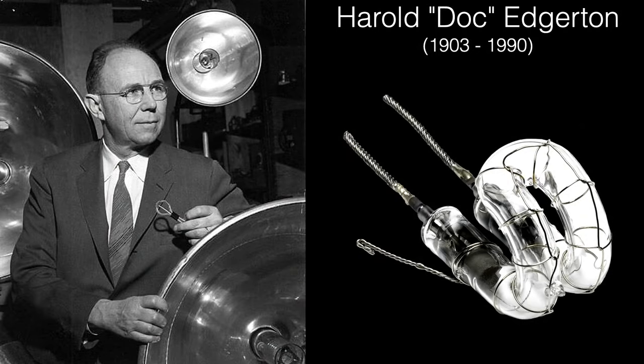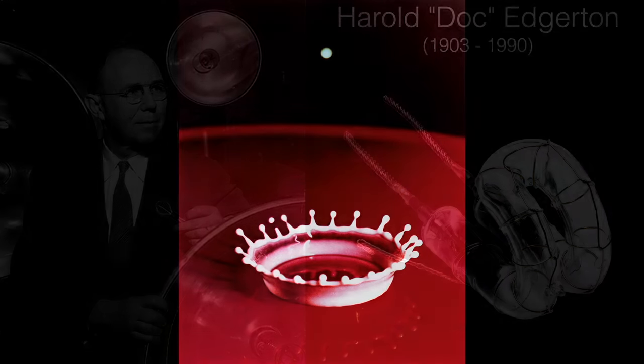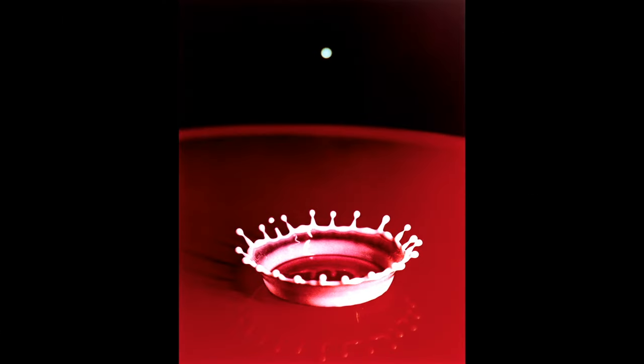The inventor of the flash tube in the 1930s was Harold Doc Edgerton. He used high-speed strobes to produce many of the iconic photos you'll find in galleries and museums. Like the classic milk drop splash.